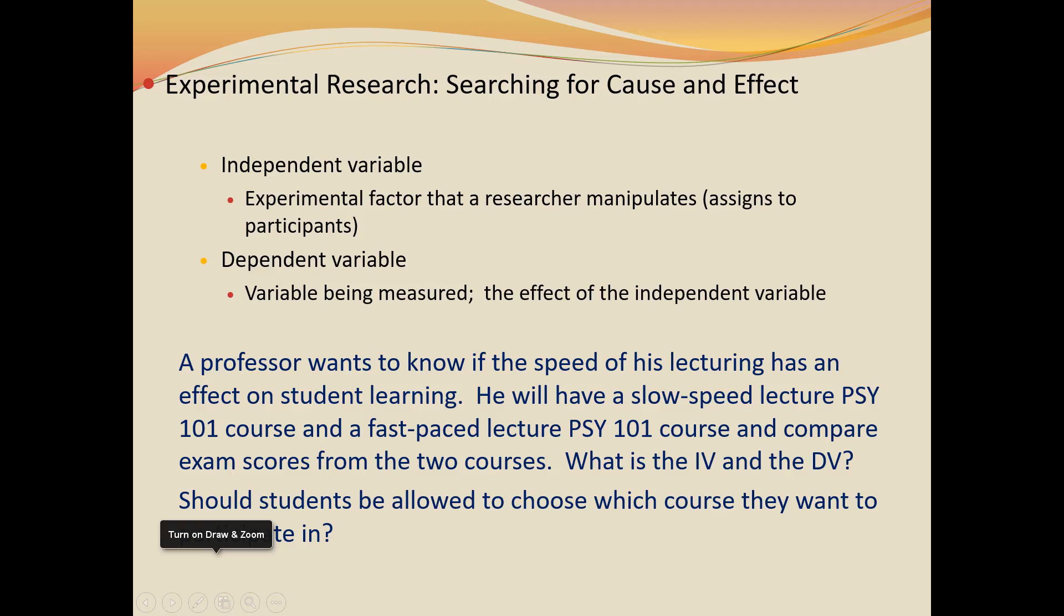Experiments is the only research method that we can use to identify cause and effect relationships between variables. And the reason for that is because in an experiment a researcher can manipulate one variable, or in other words they can assign a certain variable to a person, and then they can measure the effect of that variable, how that variable affects the person.